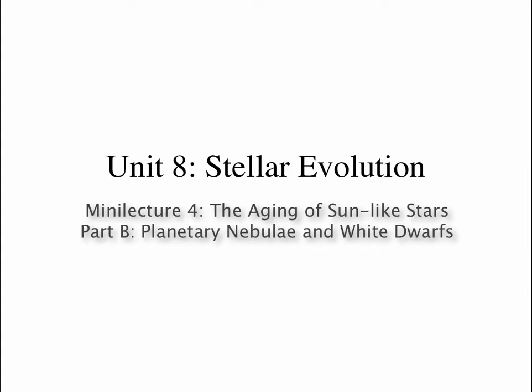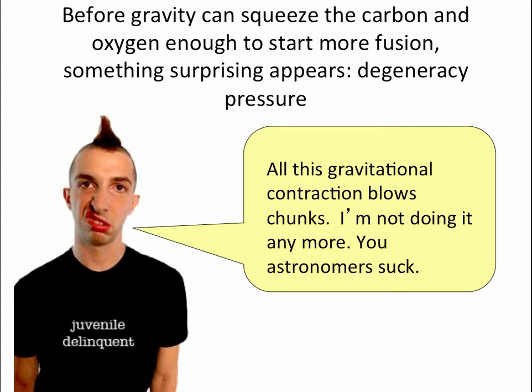Welcome to the second part of Mini Lecture 4. We were talking about how, in an asymptotic giant branch star, gravity is trying to squeeze carbon and oxygen down to begin nuclear fusion. So before gravity can squeeze the carbon and oxygen enough to make it hot enough to begin fusion, a new type of gas pressure appears. We call this degeneracy pressure.